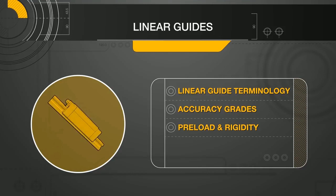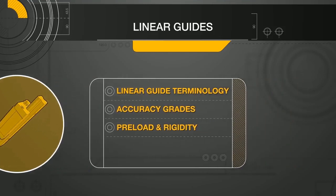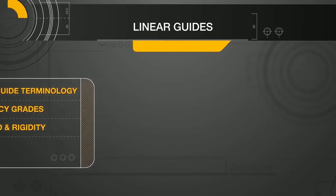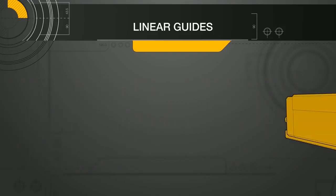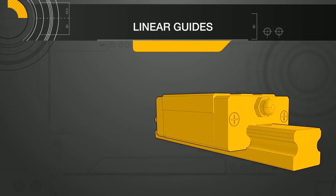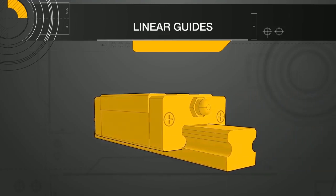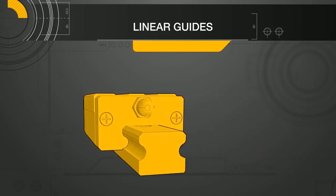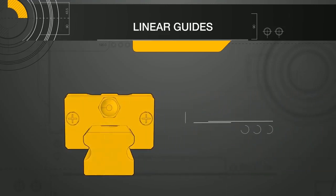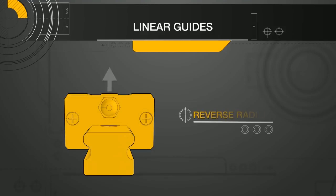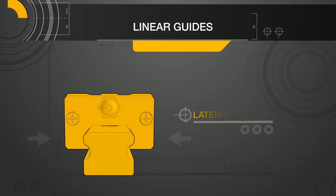Let's start by reviewing the basic load definitions in linear guide technology. There are three basic types of loading that are considered for linear guide calculations: radial or compressive loads, reverse radial or tensile loads, and lateral or horizontal loads.